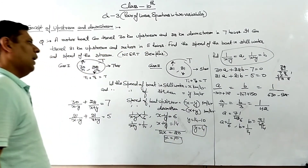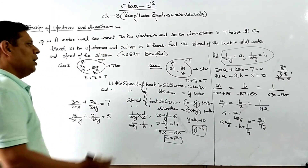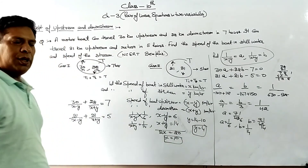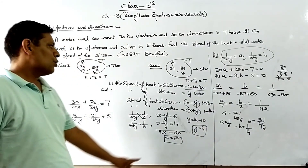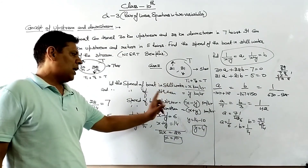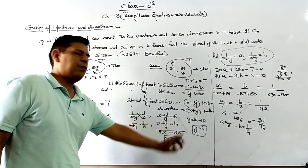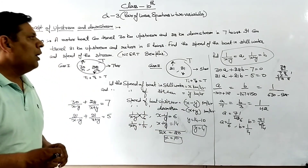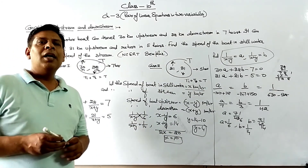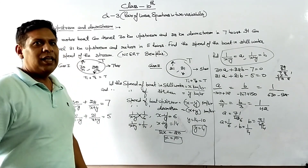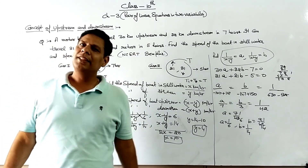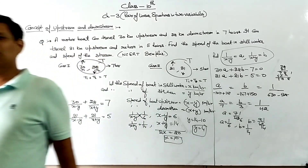X was the speed of the boat in still water, so the speed of the boat in still water is 10 km per hour, and the speed of the stream is 4 km per hour. We will see more videos on our channel. Till then, thank you very much.